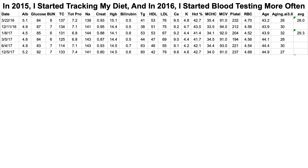In 2015 I started tracking my diet, including weighing all of my food and entering that data into a free online software — any of them will work, like MyFitnessPal or Cronometer. I recorded all of that data, including macro and micronutrients, into an Excel file. Since 2015 I have more than 2,000 days of dietary data. Then in 2016 I started blood testing more often — instead of once a year, up to six times a year to get a more complete picture of my biochemical changes throughout aging.